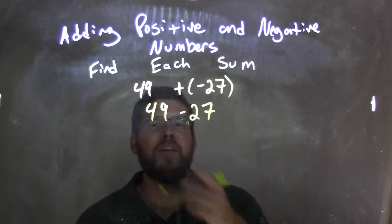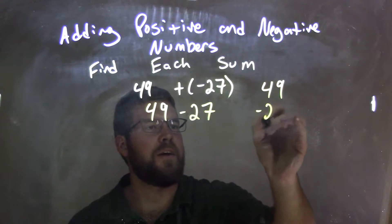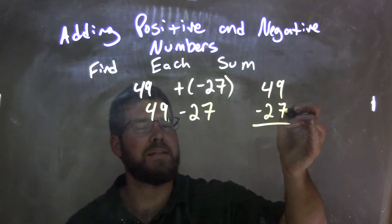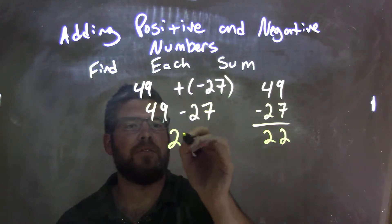And there we have it. So we have 49 minus 27. If I do the traditional way here, 49 minus 27 on the side, 9 minus 7 comes out to be 2, and 4 minus 2 comes out to be 2, and our final answer is 22.